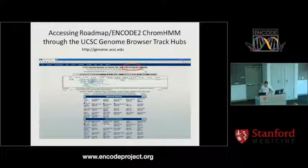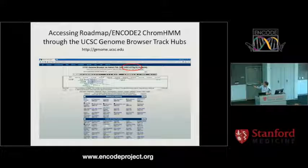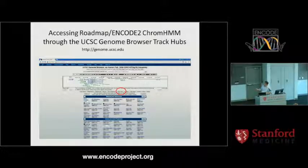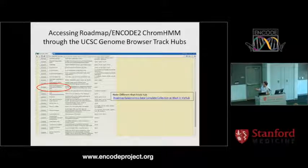To bring this up in the UCSC genome browser — I won't do a live demo because the internet is shaky, but feel free to try on your own computer — you need to be in the UCSC genome browser in the browser view in HG19. Then click the Track Hubs button to access that menu. Once in Track Hubs, you'll see a list of possible connections. You want to connect to the Roadmap Epigenomics Integrative Analysis Hub — note there's another hub called Epigenomics Data Complete Collection that sounds similar; don't click that one. Click Roadmap Epigenomics Integrative Analysis Hub and click Connect.